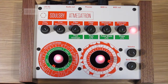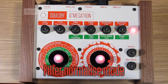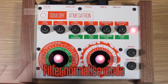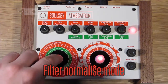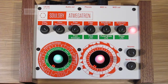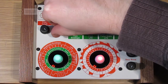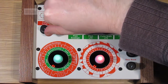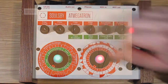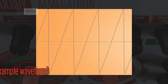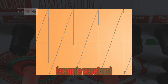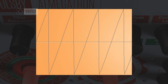Pressing the function button turns on filter normalise mode. This reduces the distortion caused by high resonance values. The reason that this distortion occurs is because there isn't any headroom in the audio path. This is because the synth is 8-bit and any bits reserved for headroom would result in an overall loss in sound quality.